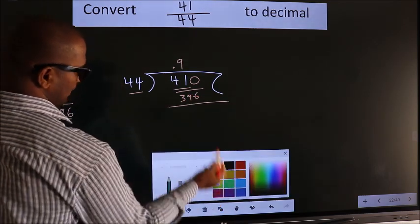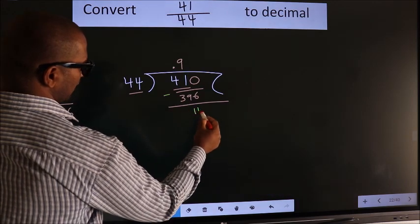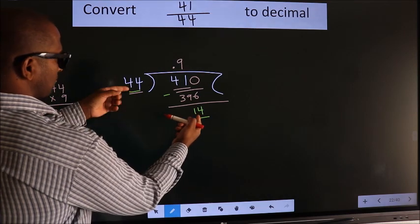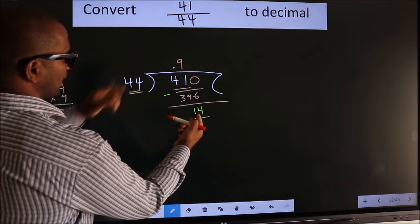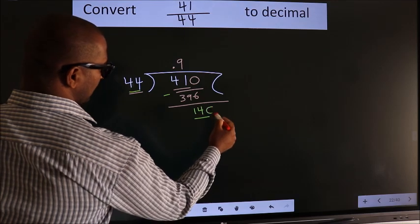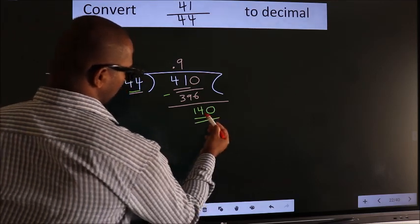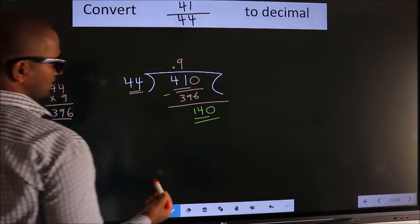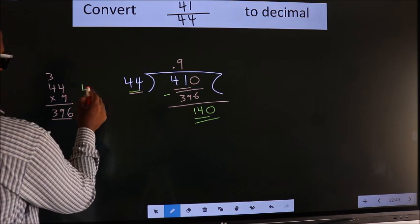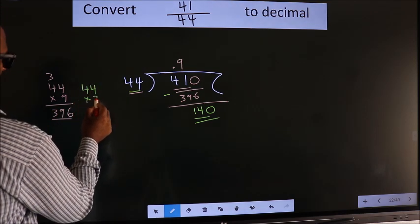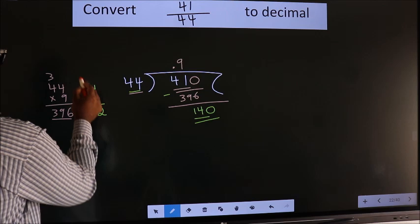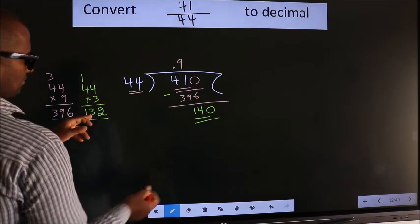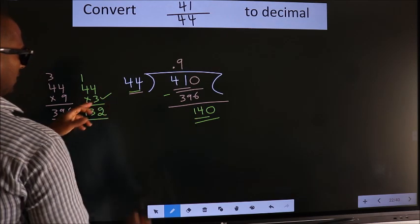Now we subtract and get 14. We have 14 here, and 44 here. 14 is smaller than 44, but we already have the decimal, so we can directly take 0, making 140. A number close to 140 in the 44 table is 3 times. 44 × 3 = 132 (3×4=12, carry 1, 3×4=12+1=13), so 132 is close to 140. We go with 3.